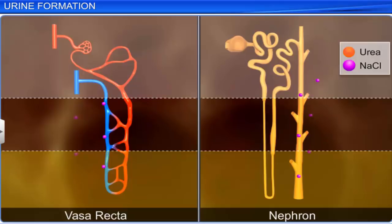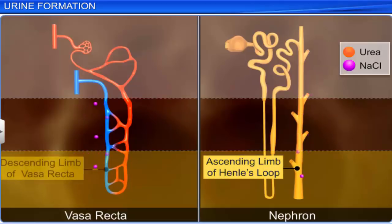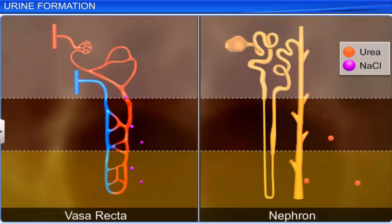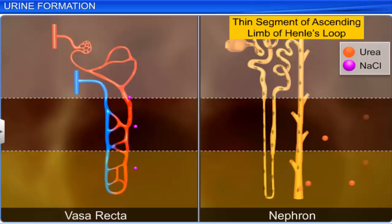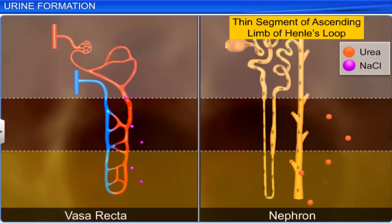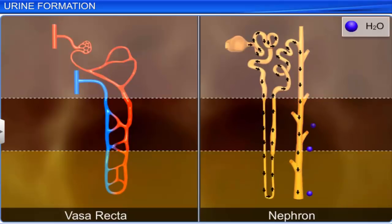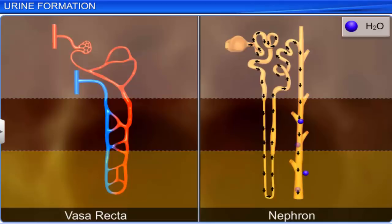The sodium chloride transported through the ascending limb of Henle's loop is exchanged with the descending limb of the vasa recta. Then, the ascending limb of the vasa recta returns the sodium chloride to the interstitium. In the same way, small amounts of urea entering the thin segment of the ascending limb of Henle's loop are transported back to the interstitium by the collecting tubule. This unique arrangement of Henle's loop and the vasa recta, together with the counter current mechanism, helps maintain the concentration gradient in the medulla, which aids the easy passage of water from the collecting duct into the medulla due to osmosis, thus concentrating the urine.